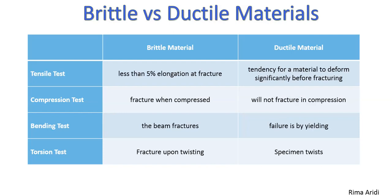Okay, here let's compare brittle and ductile materials under these four different tests: tensile, compression, bending, and torsion tests. In brittle material, the elongation of the material is less than 5%, whereas ductile material has the tendency to deform before fracturing.